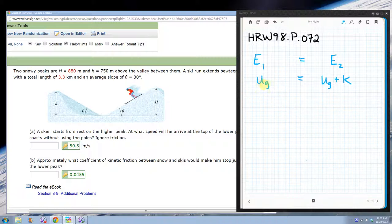So the gravitational at the top of the first peak is going to be mg times the height of the first peak, which is capital H. And potential energy at the top of the second peak is mg times little h, because it's little h high. And kinetic energy is one-half mv squared.